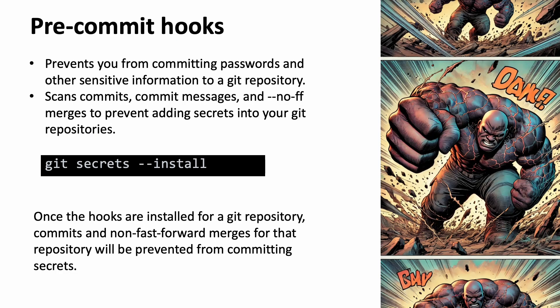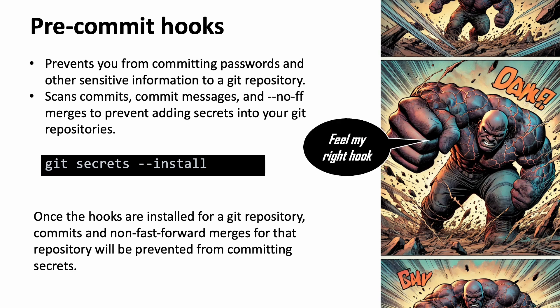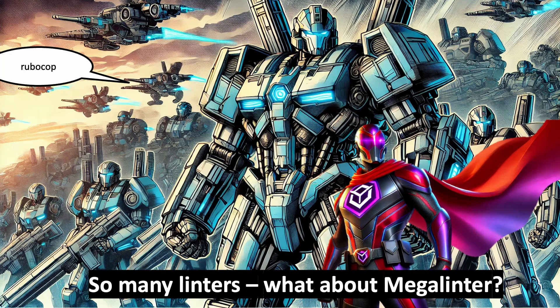Pre-commit hooks are very important for every developer. They prevent you from committing passwords or secrets in your code even before you push to your GitHub repository. They scan commit messages and check that there are no secrets inside your git repository. One of them is git-secrets — you can install it with `git secrets --install`. Once the hook is installed in your git repository, it uses non-fast-forward merges to prevent committing secrets. That is something I really recommend — it is good practice for a healthy application security program.